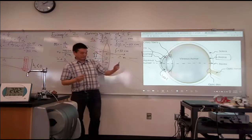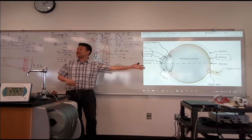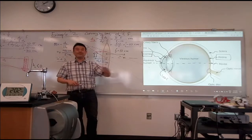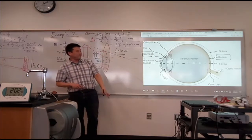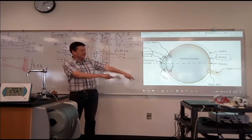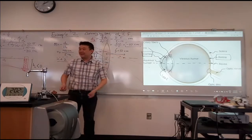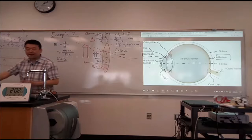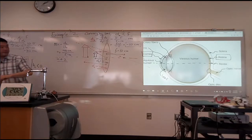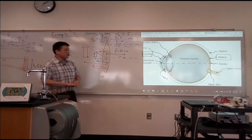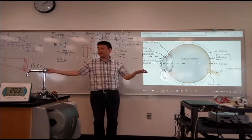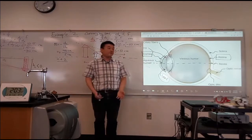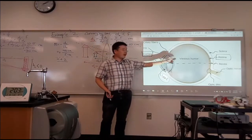If you're interested in the human eye, you can read that on your own — I'm never going to test you on it. My own limited vocabulary of the eye is cornea, lens, and retina. In terms of physics, that's what these words mean. Lens means what you think it means — it's the focusing element of your eye.